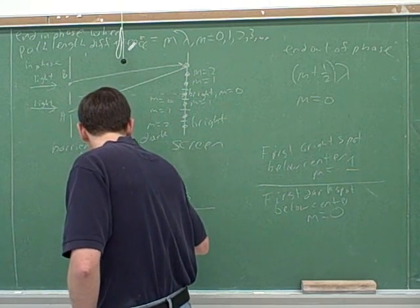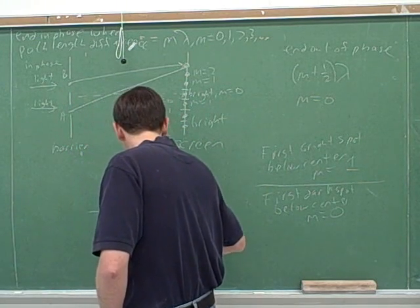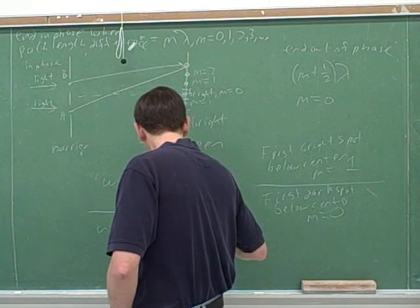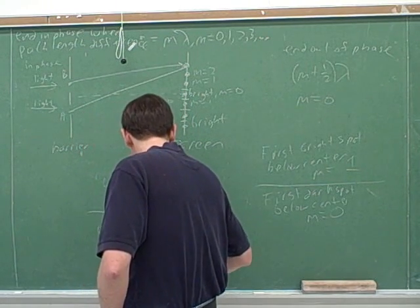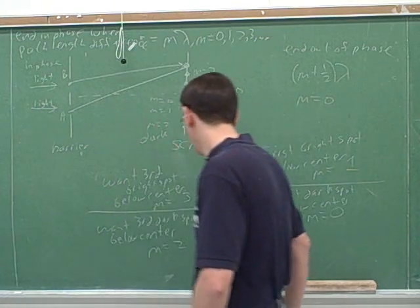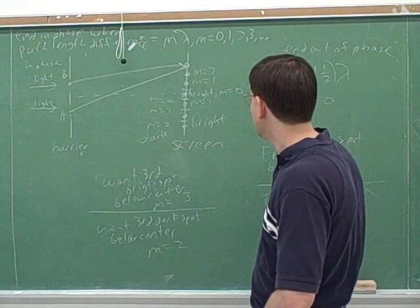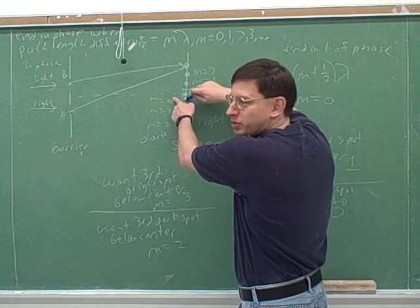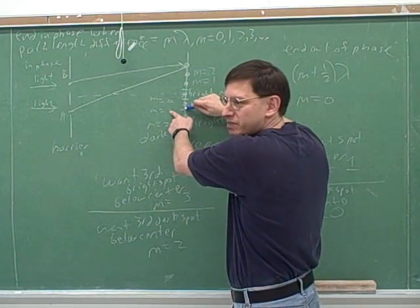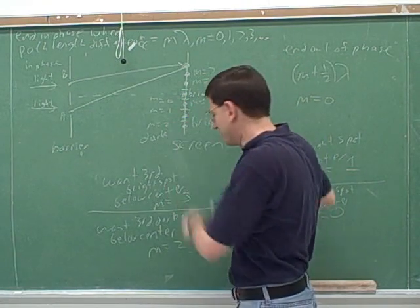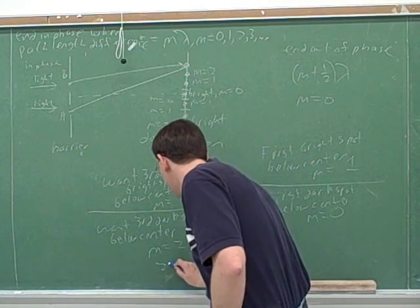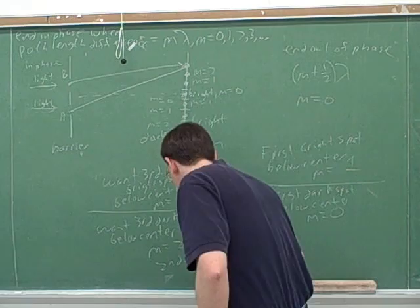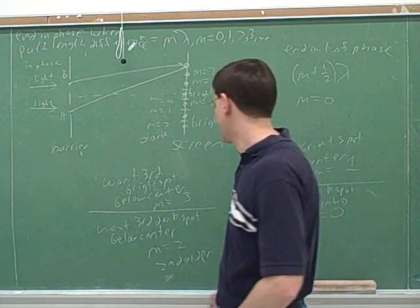And now let's say we want the third dark spot. Right, because the first dark spot was M equals zero, and the second dark spot is M equals one. So the third dark spot is M equals two. So what order is the third dark spot? Yeah, this would be second order. Because the order just comes from the M.